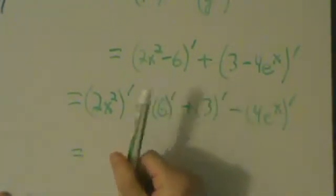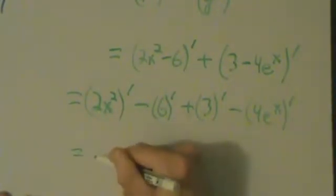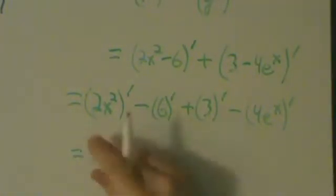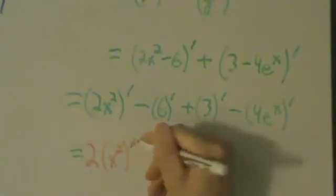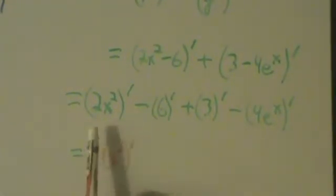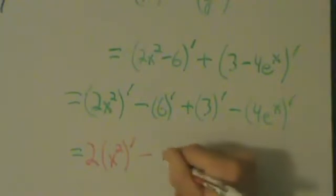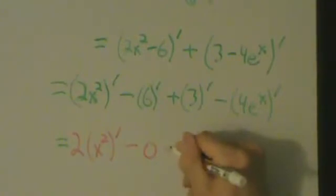So (2x²)' just means derivative, right? So 2 is just a constant, so we can pull it out. That's going to be 2 times (x²)'. Remember, constants can just be pulled out of derivatives. (6)' - the derivative of 6 is just 0, right? Derivative of any constant is 0. Same thing here, 3 is just a constant, so its derivative is 0.